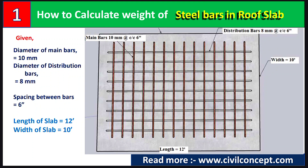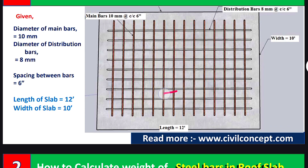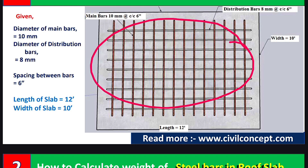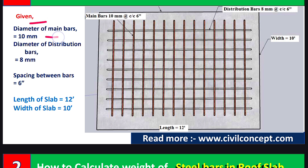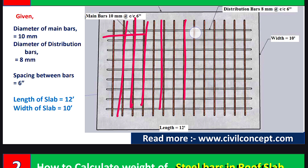Hello guys, welcome to Civil Concept. In this video we will see how to calculate the weight of steel bars in a roof slab. Here you can see this is a slab and we will calculate the total weight of the reinforcement. The diameter of the main bars is 10 mm and the diameter of the distribution bars is 8 mm. We always provide main bars in the shorter span and distribution bars in the longer span.